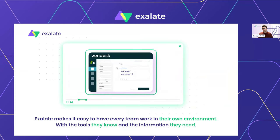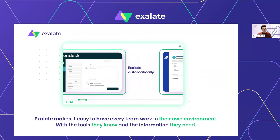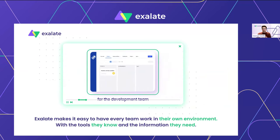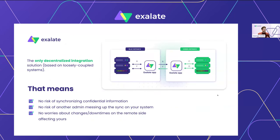The key way control is achieved is through our architecture. You have your two systems with dedicated Exalate apps on each side — they are loosely coupled, not stuck together with something in the middle. That gives you control over what information is being synchronized — no risk of confidential information leaking. Groovy scripting acts as a filter. There's also no admin access risk on the other side, no single point of failure, so downtime on one side doesn't affect the other.